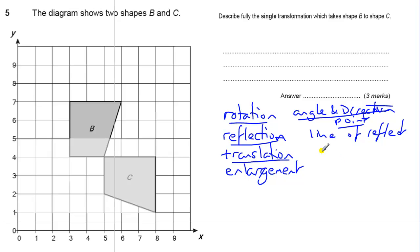A translation, you're looking for the name and we're looking for a vector, so something like 5, 2 if it's sliding across 5 and up 2.